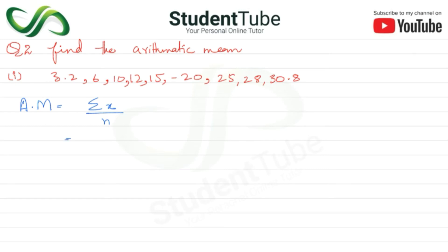So 3.2 plus 6 plus 10 plus 12 plus 15 plus 25 minus 20 plus 25 plus 28 plus 30.8, we have to divide. The values will be 1, 2, 3, 4, 5, 6, 7, 8, 9. We have to divide by 9. So this is 110 divided by 9. So the answer is 12.222.